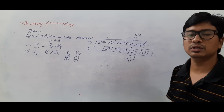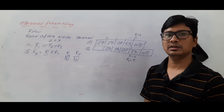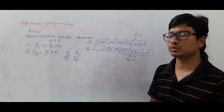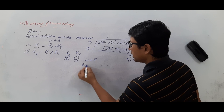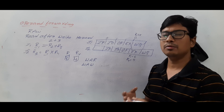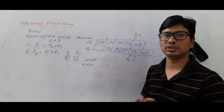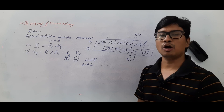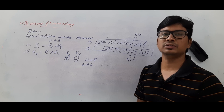I hope you have understood what operand forwarding is and how it eliminates the read after write hazard. In the next video, we will discuss the next two hazards: write after read hazard and write after write hazard, and then provide the solution called register renaming. If you still have any doubts, feel free to ask in the comment section. I will try to clear your doubts in less than 24 hours. Thank you for watching. Have a nice day.